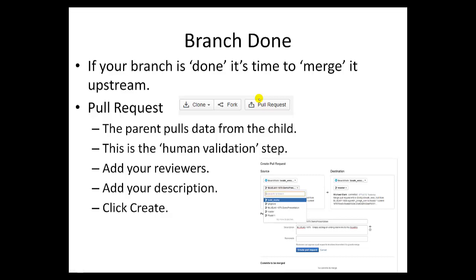A Pull Request is the parent pulling the data from the child. You upload a branch and you want to push that branch into Master. You need Master to say it's going to pull your new branch into itself. This is also the place that we add human validation. Here we add reviewers and create a very detailed description including your JIRA ticket number. Once we've done that, we click Create. Then that Pull Request is queued and waiting for reviewers. Once it's reviewed, we can click Merge.